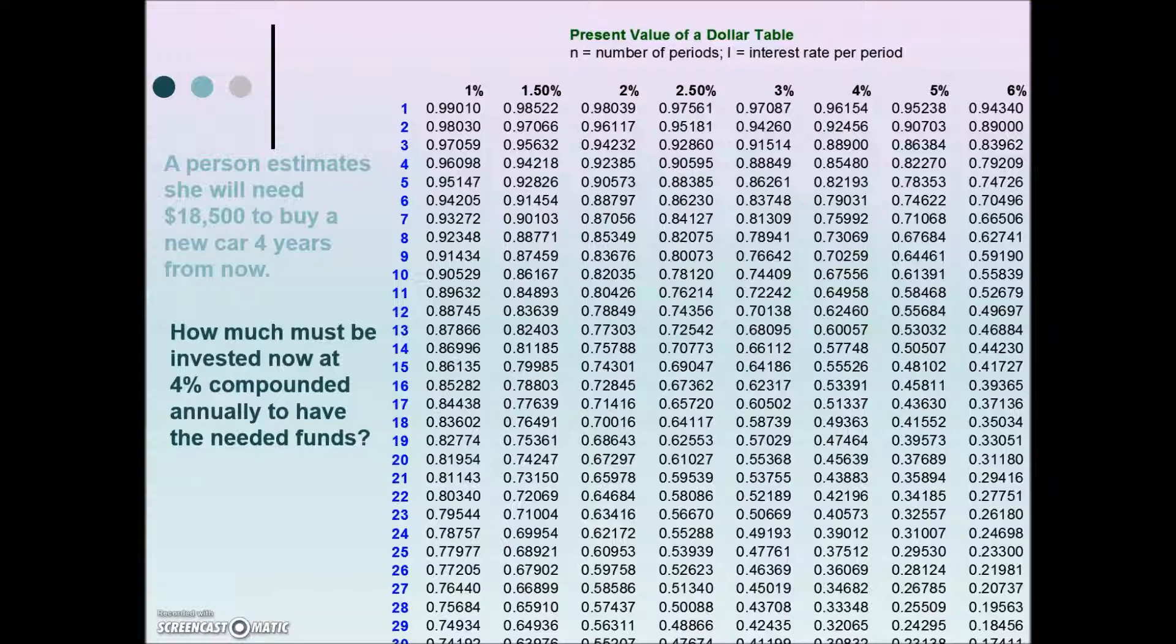We need to calculate the interest rate per compounding period. It's 4% compounded annually, so we take 4% divided by 1 will give us our 4%, which will put us over here in this column.